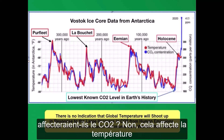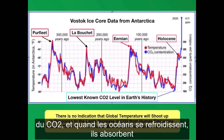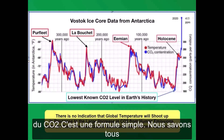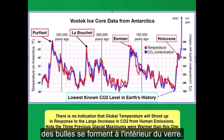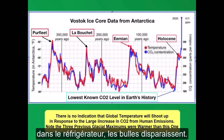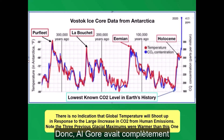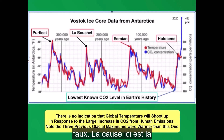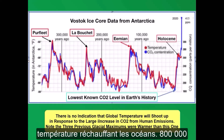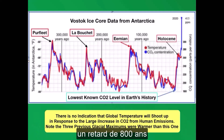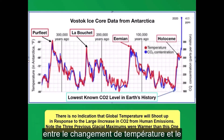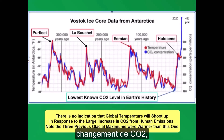No — that affects temperature. And when the oceans warm, they give off CO2. When the oceans cool, they absorb CO2. It's a simple formula. We all know that if you take a glass of water out of the fridge and put it on your counter, bubbles form on the inside of the glass — that's the gases coming out. Put it back in the fridge, the bubbles disappear. So Al Gore had it exactly backwards. The cause is the temperature warming the oceans. There's an 800-year lag in the Vostok ice core record — 800 years between the temperature changing and the CO2 changing. The effect never comes before the cause, so this is rock-solid. Now it's 420 ppm. The temperature has not followed the CO2 up.